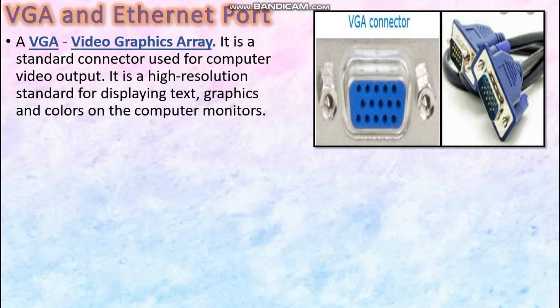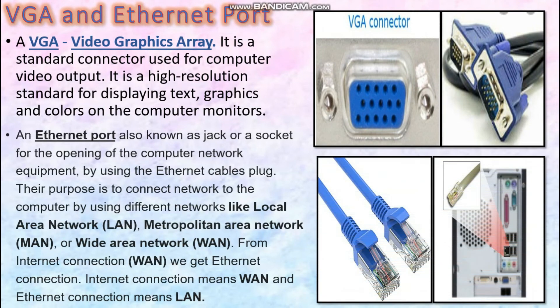Let us now study about the Intranet port. The Intranet port is also known as a jack or a socket. This port is used to give access for internet connection by using an Intranet cable plug. These cables are used to connect a computer to different networks such as LAN, MAN, and WAN. LAN means Local Area Network. For instance, you have a modem — your modem provides Wi-Fi only inside your house. You cannot get Wi-Fi on the main road. So that is the meaning of Local Area Network, where you get your internet connection inside the house or at school.